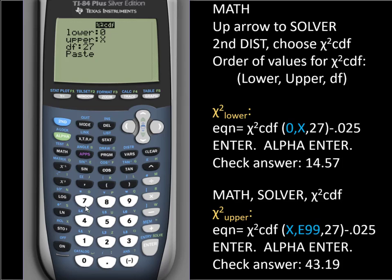For the lower value, we'll put a zero. The upper value is X, which is using this X T theta pi button to plug that in. It's just, if you click it, you get the X. Degrees of freedom is N minus one or 27. And then we're going to press paste.